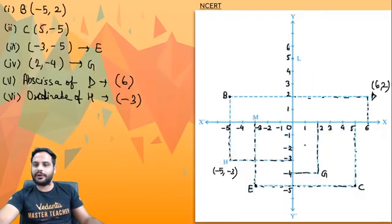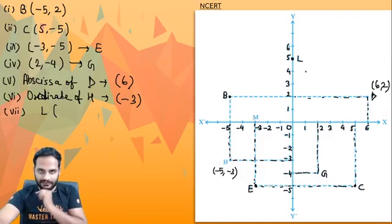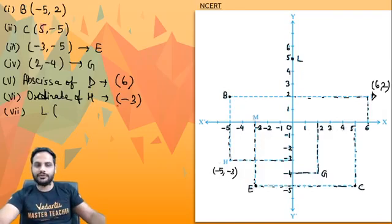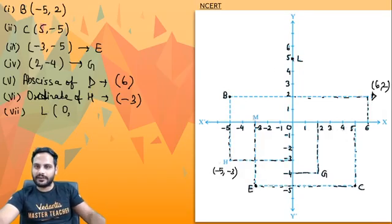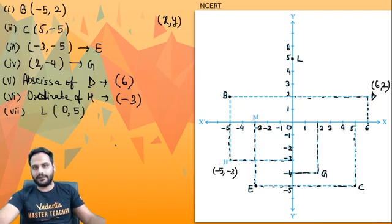Then coordinates of point L. Point L is somewhere over here. Since this point is on the y-axis, the x-coordinate will be 0 and the y-coordinate will be 5, where it lies. So coordinates of L are (0, 5). Remember, we always write the x-coordinate first, then the y-coordinate.